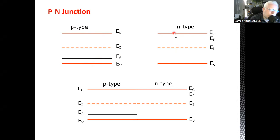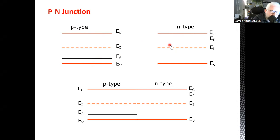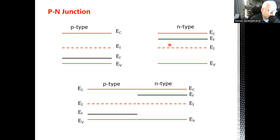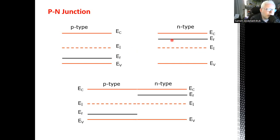The next step is forming a P-N junction. We are going through this process as part of understanding the concepts inside solar cells. Once we combine these two energy band diagrams in order to have a reference, our reference indicator is the Fermi level.